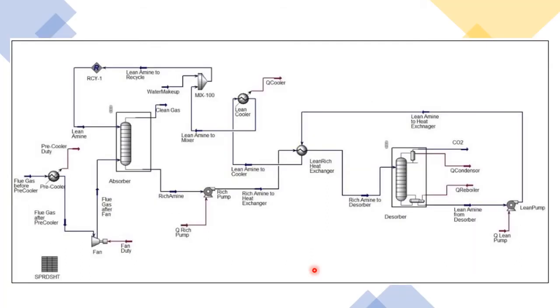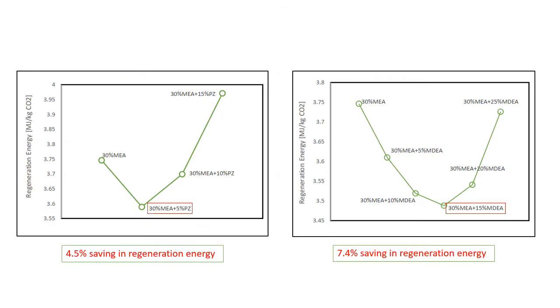The explained process has been simulated in Aspen HYSYS version 10 and a screenshot from the process has been included here. As mentioned earlier, the Absorber-Desorber Amine-based process is energy intensive, meaning it requires lots of energy, especially for regeneration.